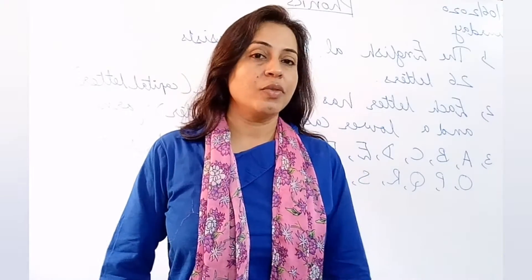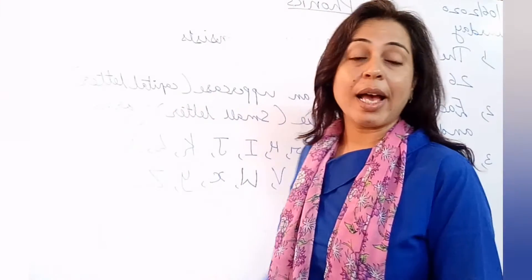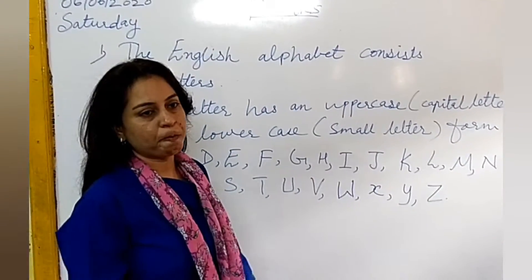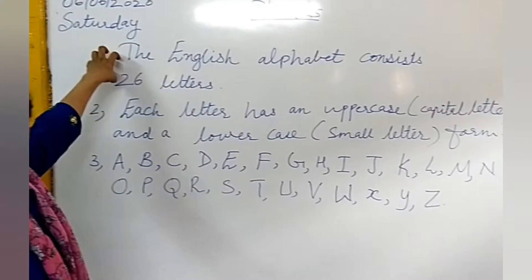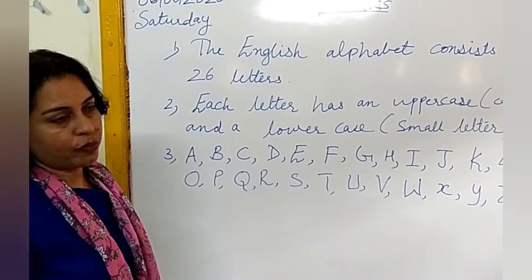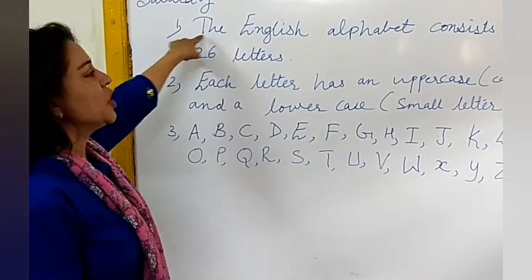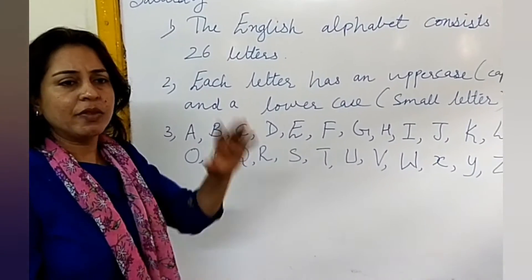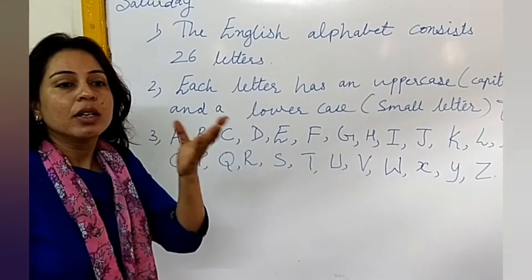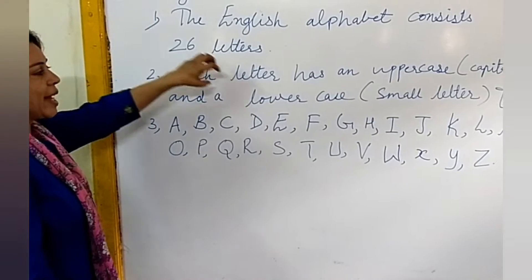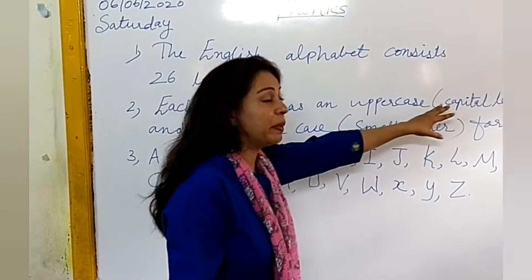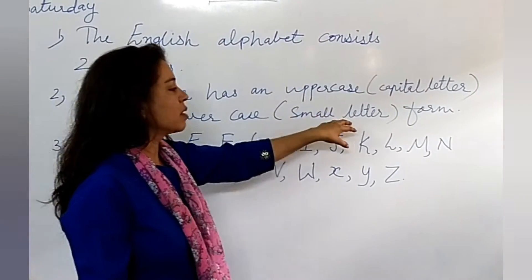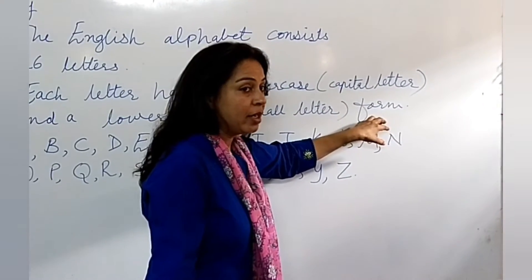Now, let's start our topic. Look at the board and listen to me. I have written here few points for you. Number one point is, the English alphabet consists of 26 letters and you know very well. You learned this in your lower standards. Each letter has an uppercase, meaning capital letter, and a lowercase, meaning small letter form.